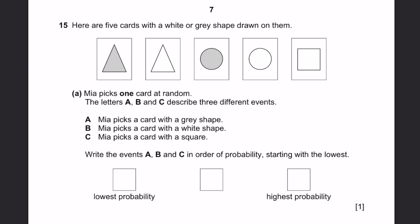Well, the probability of getting a grey shape is 2 out of a total 5. So, this is a total 2 by 5. Now, for white shape, it's going to be 3 out of a total 5. And for a square, it's going to be just 1 out of the total 5. So, starting with the lowest, we have C, and then we have A, and then the highest is B.